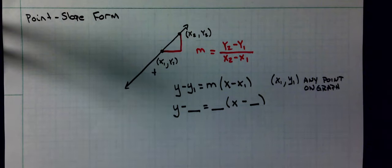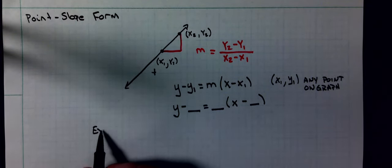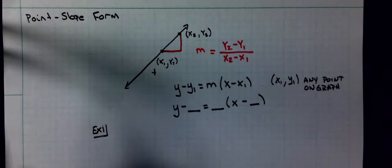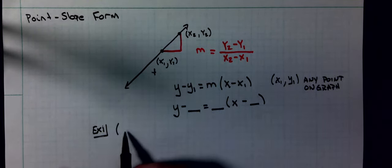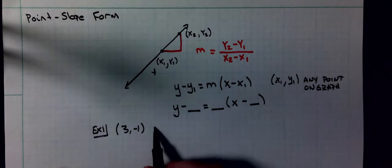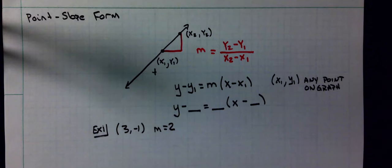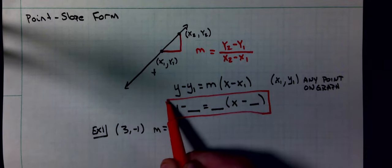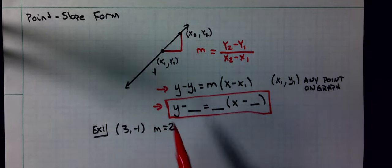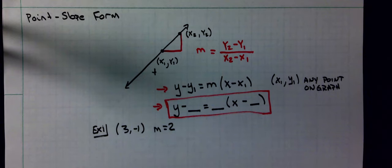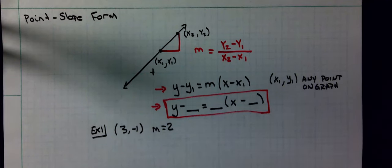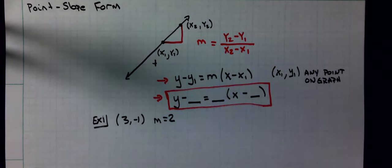So how can they provide us that information? Let's do some examples. I want to write the equation of a line in point-slope form. You need to memorize the equation — the template we're going to use — because it's not on any notes that are going to be provided for you on a test, quizzes, or testing. It's something you need to memorize.